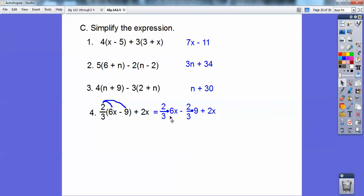Now 2 thirds times 6x, this is like 6 over 1 and you can cross cancel. This 3 goes into this 6 two times. Over here, this 3 goes into this 9 three times. So I'm going to go ahead and cancel those. And then I'm left with 2 times 2x is 4x minus 2 times 3 is 6. So I get 4x minus 6. Don't forget my plus 2x there.